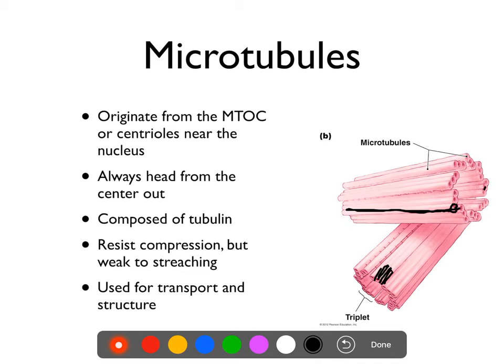There are two main functions of microtubules: structure and transport. Microtubules are very stiff but also fairly transient, meaning they can be built and taken down very quickly. All microtubules in most eukaryotic cells originate from the microtubule organizing complex, which is part of the centrioles — those two barrel-looking structures. In animal cells and some protozoa, they play a very important role in mitosis, putting out microtubules that grab hold of chromosomes and pull them to opposite sides of the cell.